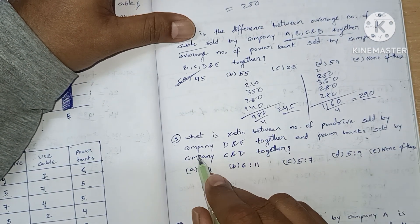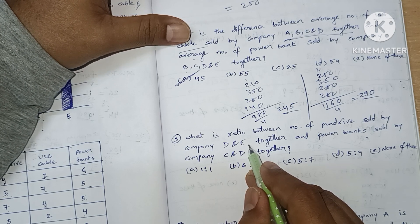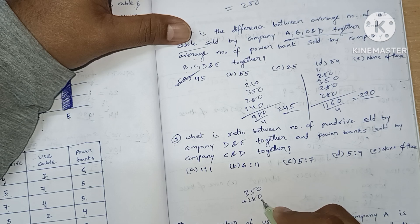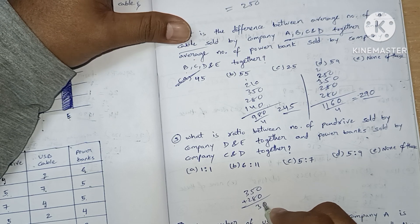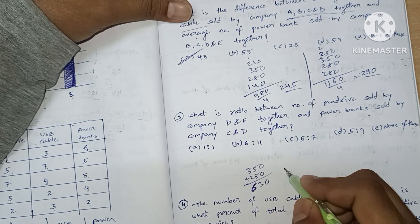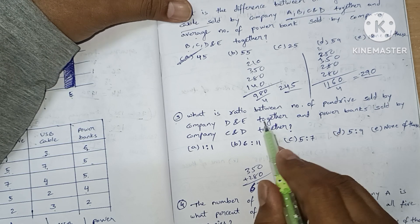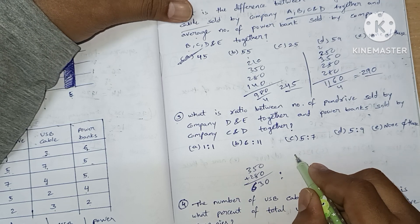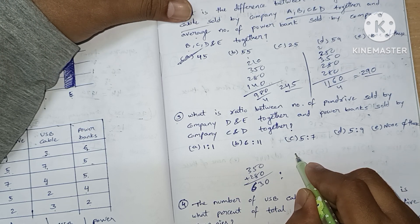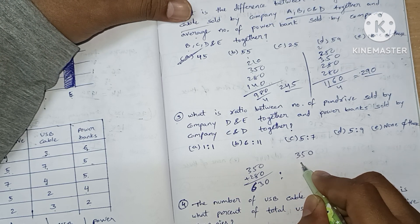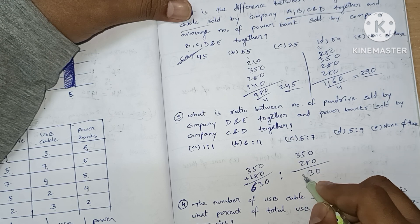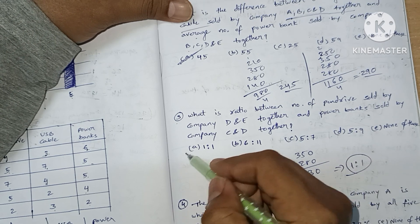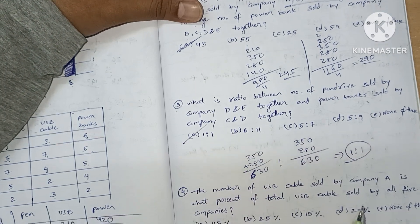Question number three: find the ratio between the number of pen drives sold by D and E, and the power banks sold by C and D together. Pen drives of D and E: 350 + 280 = 630. Power banks of C and D: 350 + 280 = 630. So the ratio is 630:630 = 1:1, which is option A.